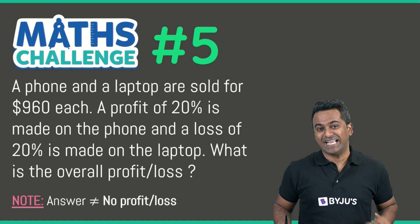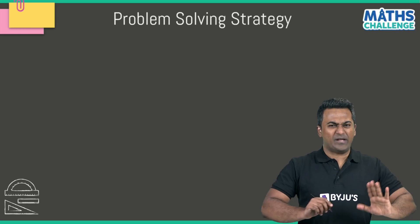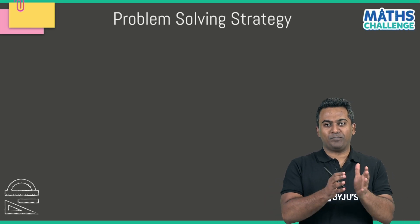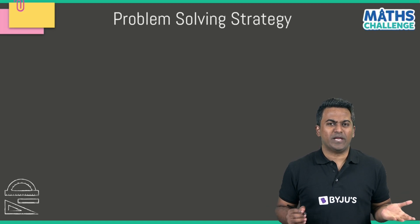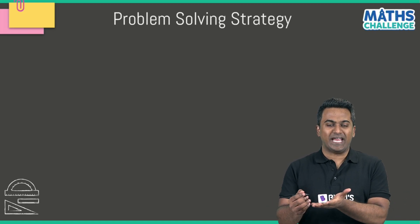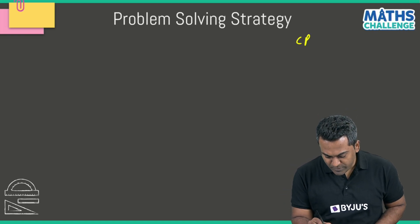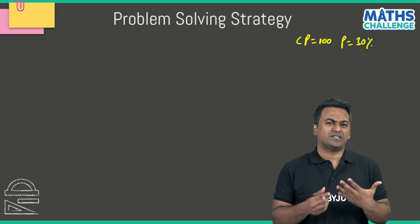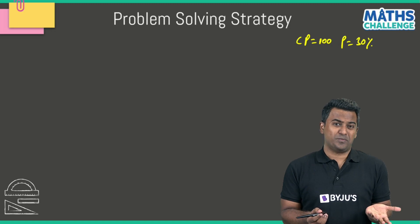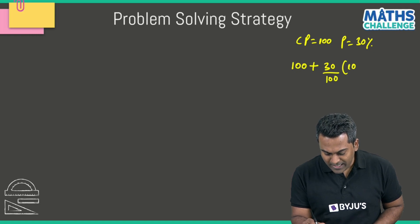Let's check how this is done. We're familiar with the basic ideas of profit, loss, cost price, and selling price. For example, if the cost price is 100 and the profit is 30%, to figure out the selling price you would do 100 plus 30% of 100.